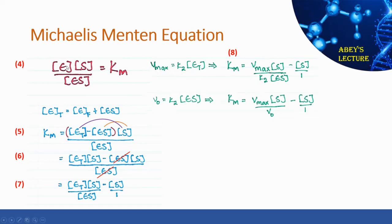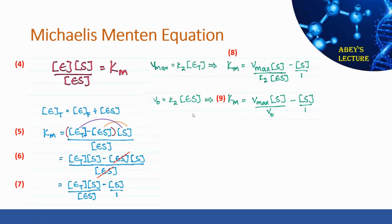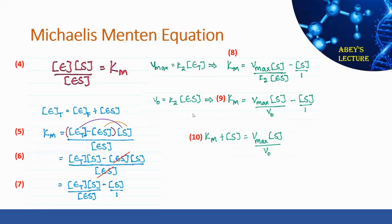We also know that the velocity of the reaction V0 is given by kcat times the concentration of the enzyme-substrate complex. We can see this in the denominator of equation 8, so we replace k2 times the concentration of ES with V0, giving equation 9. Rearranging this to isolate V0 gives equation 10, and simplifying yields equation 11 — which is the Michaelis-Menten equation.